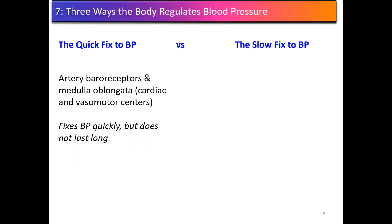The quick fix: if blood pressure drops too low, baroreceptors in your arteries detect it and send a signal to the medulla. The medulla responds by increasing heart rate and vasoconstricting arteries to raise blood pressure back up. The opposite is also true: if blood pressure goes too high, the medulla responds by decreasing heart rate. This is called a quick fix because within one to two seconds the medulla has already changed your heart rate and blood pressure, but after 10 to 20 seconds it's done and heart rate returns to normal.